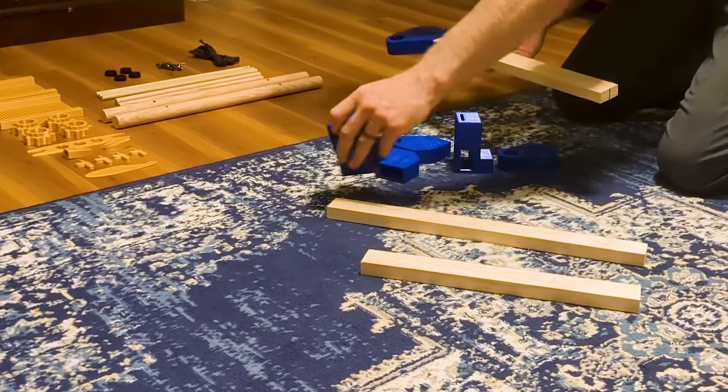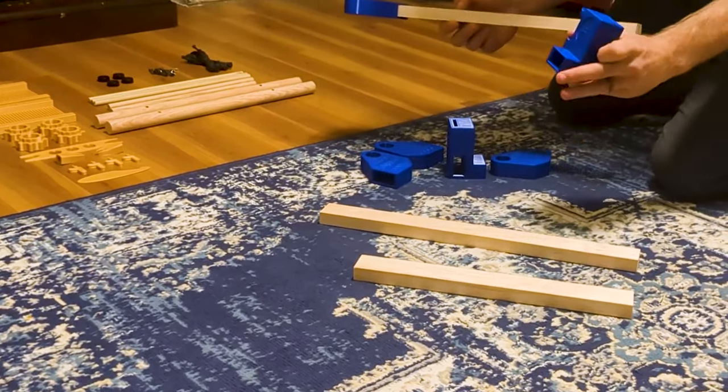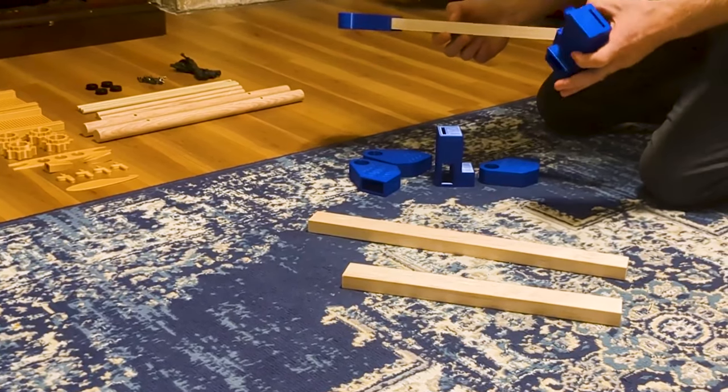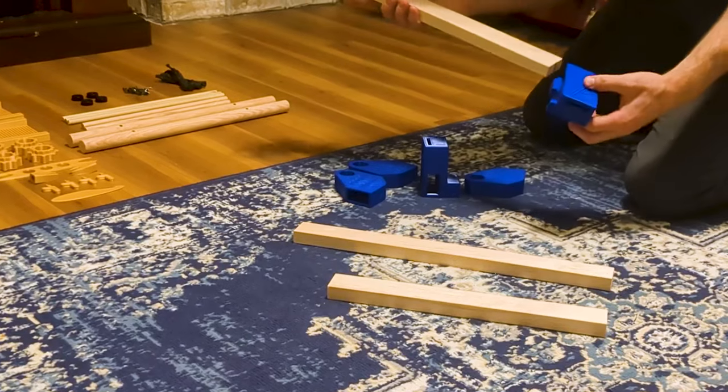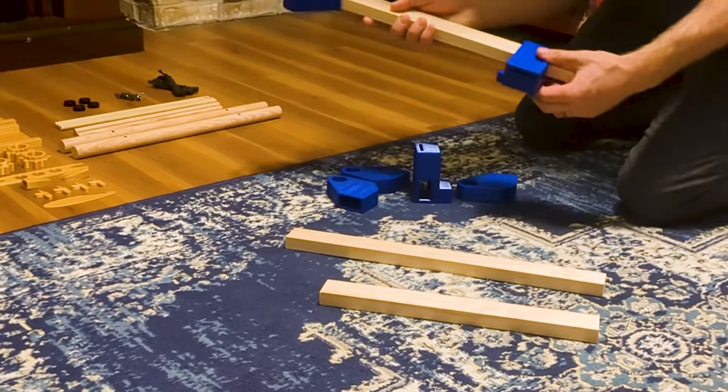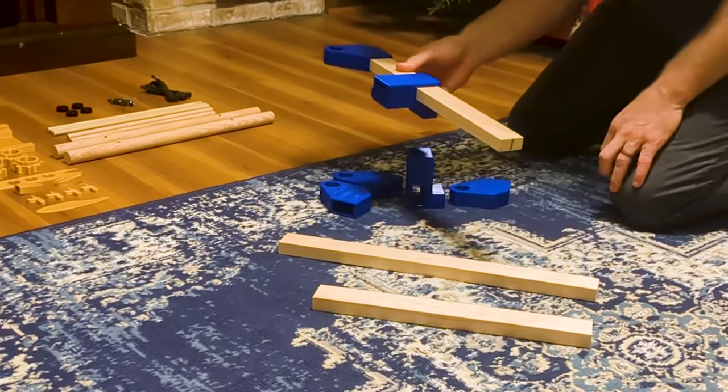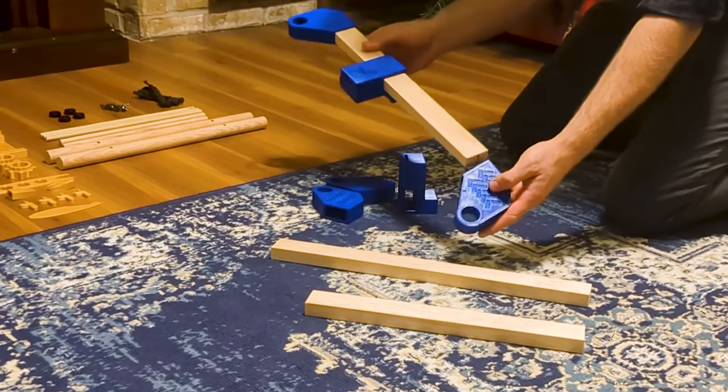Then we're going to take one of these two towers and make sure that the square bit is going to go away from the side that has this nice texturing. It's going to slide in here, approximately into the middle.